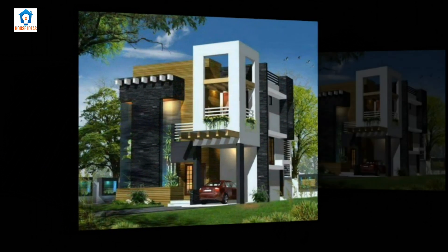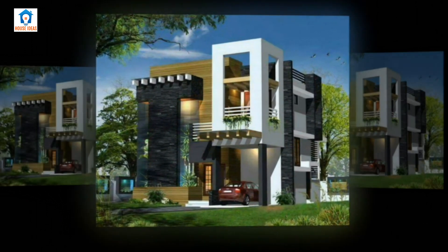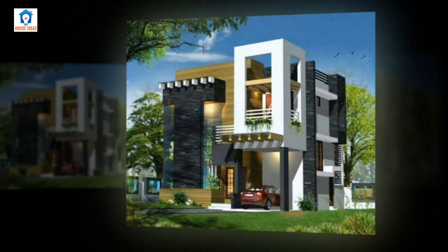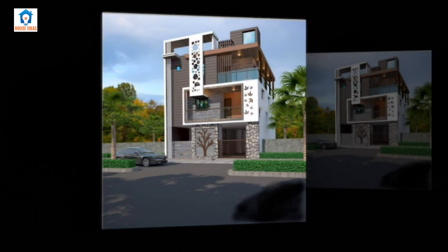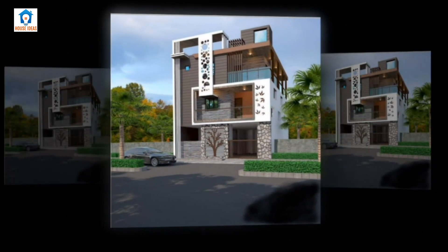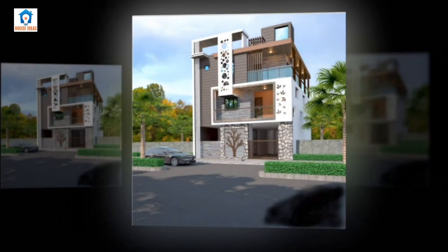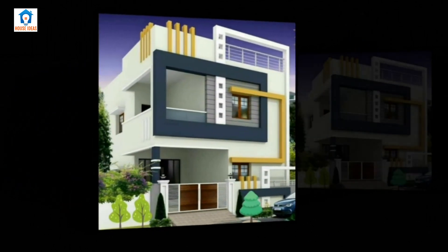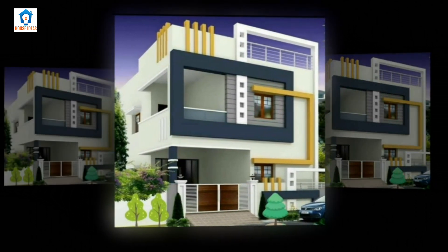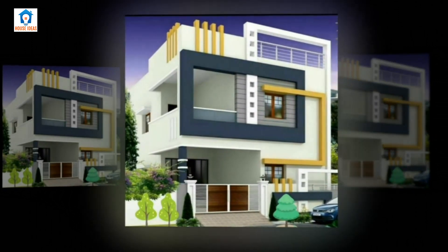Elevation is a two-dimensional drawing of the building's facades. As buildings are rarely simple rectangular shapes in plan, an elevation drawing is a first angle projection that shows all parts of the building as seen from a particular direction, with the perspective flattened. Generally, elevations are produced for four directional views — for example, north, south, east, and west.